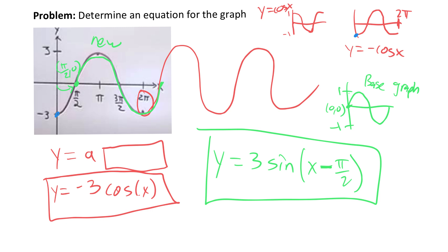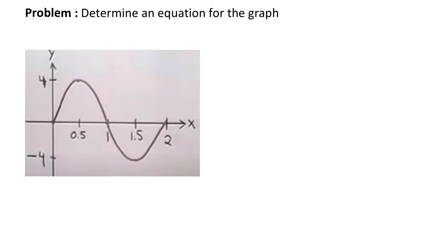Let's try one with a little more flair. Here we have what looks like a basic sine graph — we have the peak and then the valley. The sine graph goes from one to minus one, and this graph goes from four to minus four, so we're thinking an a value of probably four. And because it goes up and down, it doesn't look like we have to deal with any reflection at all.